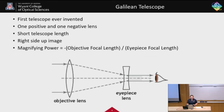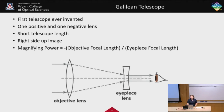The Galilean telescope has first a positive lens that converges the light, and then a negative lens that straightens it out again so that it's easier to look at. These are used because they have a short telescope length and give you a right-side-up image. The magnifying power is negative one times the focal length of the objective lens divided by the focal length of the eyepiece lens. That negative sign means two positive lenses give a negative magnification, or an upside-down image, while a mismatch gives a right-side-up image, as in the Galilean telescope.